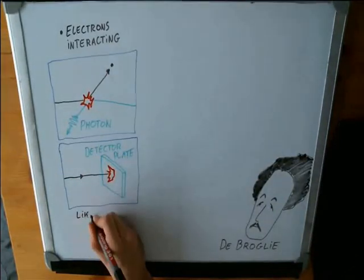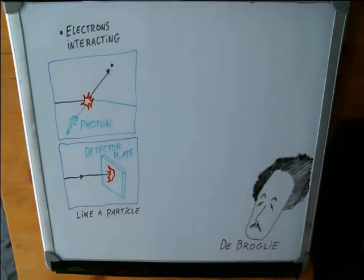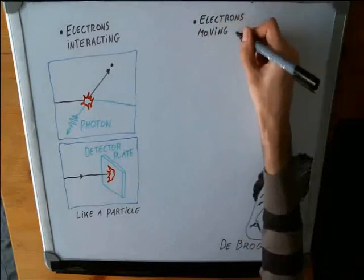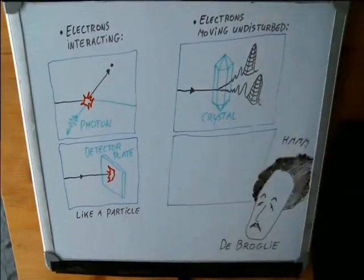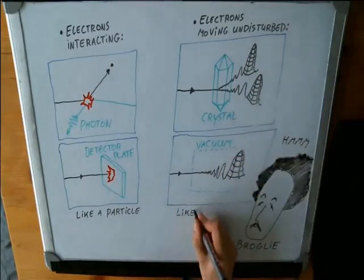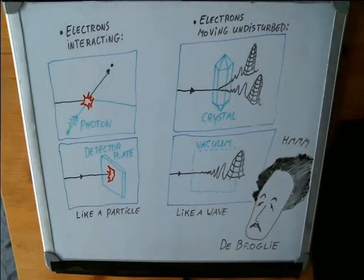the electrons presented themselves as particles, as hard little balls of matter. Kind of what you expect them to do. But when the electrons were allowed to move on their own, either by being shot through a crystal or allowed to wander through a vacuum, they always propagated as if they were waves.